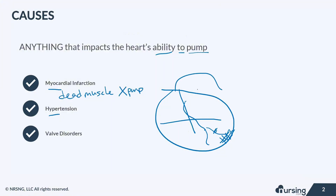Now in hypertension, if you remember from the hemodynamics lesson, there is an increased pressure in the system. The heart is having to work even harder against that pressure, so you're going to see an increased afterload. The longer the heart has to work that extra hard to get past that afterload, the more likely it is to begin to fail and kind of tire out.